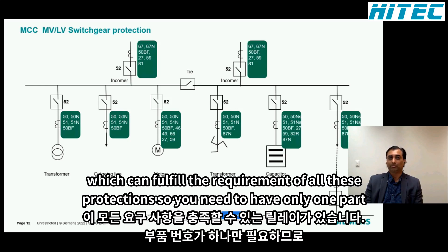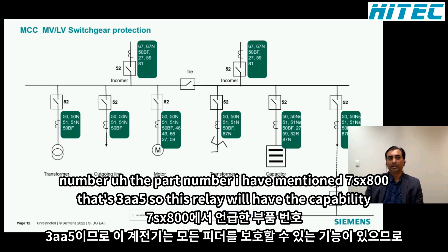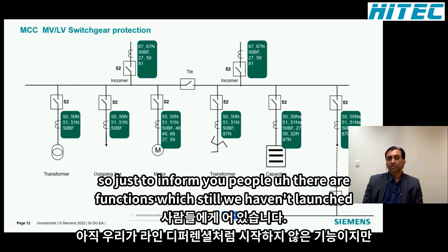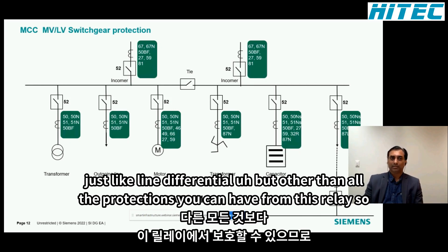Imagine if you needed to choose a different relay for each feeder type — a different one for incomers, for transformer feeders, for motors, and for line differential. What if I told you there is one relay that can fulfill all of these protection requirements? You only need one part number: 7SX800-3AA51-1CS0. This single relay has the capability to protect any feeder type.